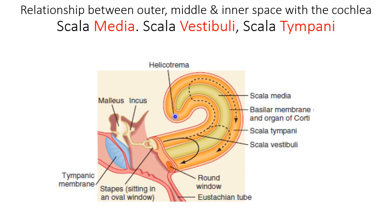From this point, another turn starts called scala tympani. It starts from the helicotrema and ends at the point where the round window is present.